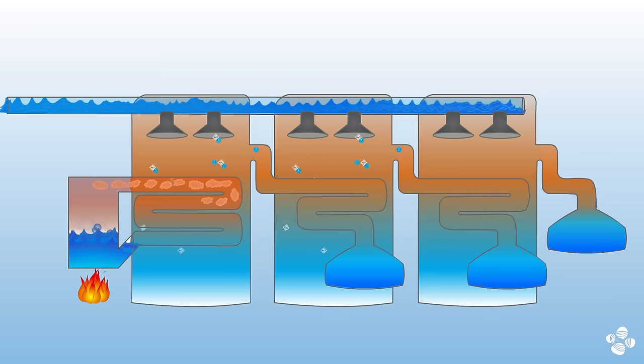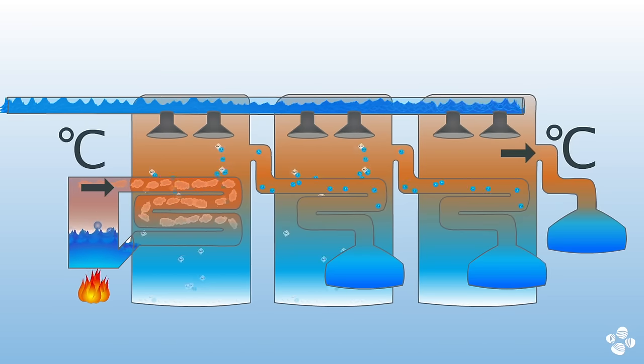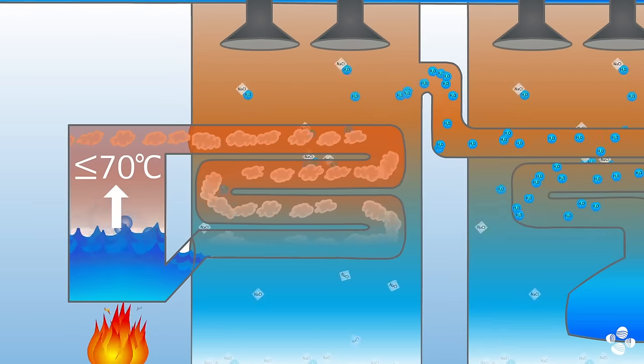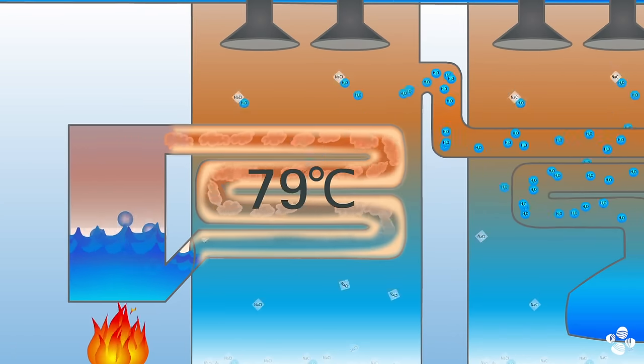Unfortunately, the process is physically limited by the first and last temperatures in the sequence. The input temperature cannot be more than 70 degrees Celsius, or minerals in the seawater will cause scaling on the pipes.